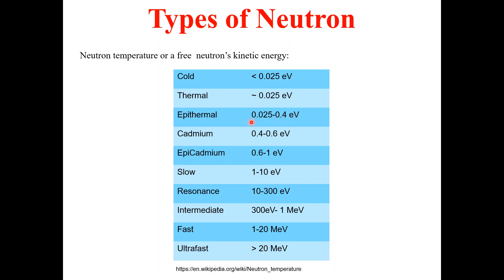Epithermal neutrons are the type of neutrons with energy between thermal neutrons and cadmium neutrons. Then we have cadmium neutrons. Cadmium neutrons have energy in the range of 0.4 to 0.6 electron volts.